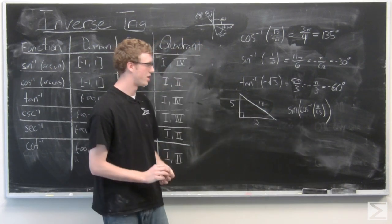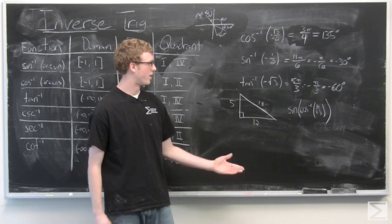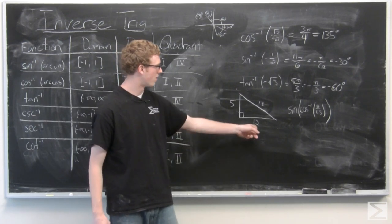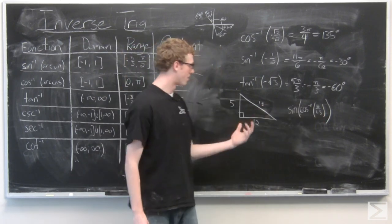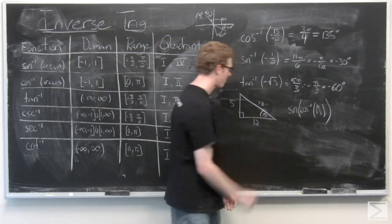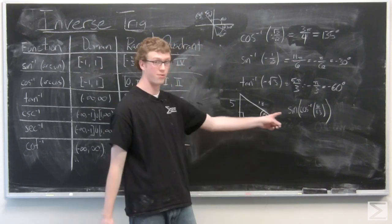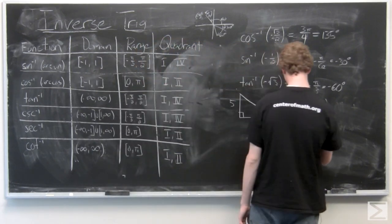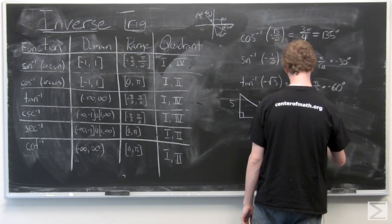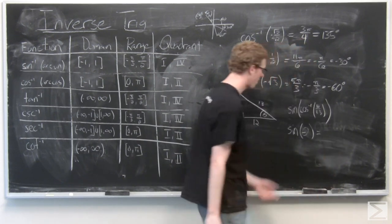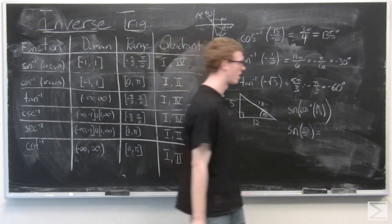So in this triangle, the 12 over 13 would correspond to that inverse sine. So that corresponds to this angle here. And we can go ahead and rewrite this as sine of theta. And then sine of theta is just opposite over hypotenuse.